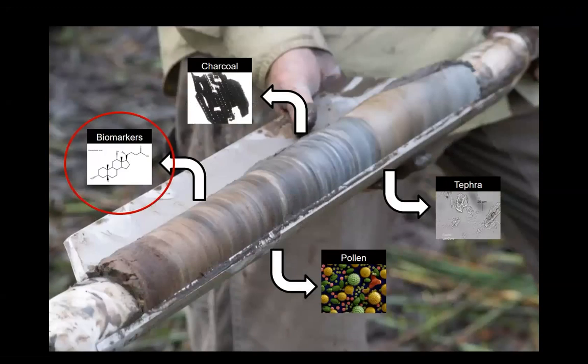When we extract a core, we can subsample it for all these different proxies of different environmental processes: tephra for age constraints, pollen and charcoal for vegetation and fire, and biomarkers. Dave's work has already involved coprostanol, which is used to quantify human impacts in the past. People have also used similar biomarkers for herbivores, but only in domestic grazing systems — this is the first time anyone's going to try to apply it for wild herbivores.